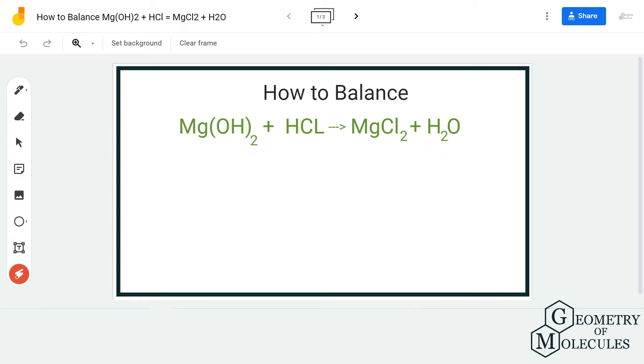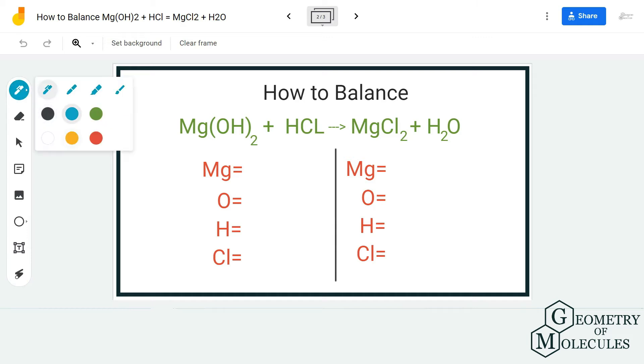MgCl₂ is a salt and H₂O is water. To balance this equation we first need to know the number of atoms on both sides of this equation. For the reactant side we have one magnesium atom and that is the same for the product side as well, so place one on both sides.